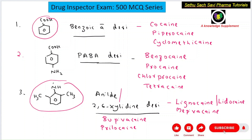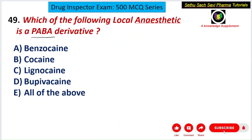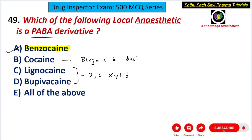Returning to the question — which is a PABA derivative? The answer is A — benzocaine, which is a para-aminobenzoic acid derivative. Cocaine is a benzoic acid derivative, while lignocaine and bupivacaine are 2,6-xylidine derivatives.